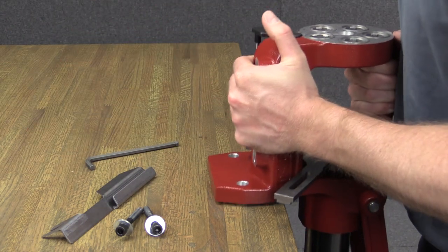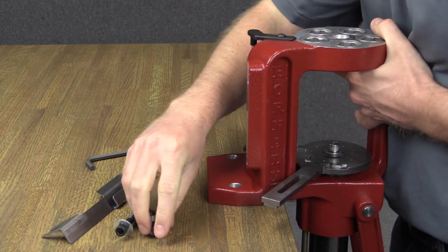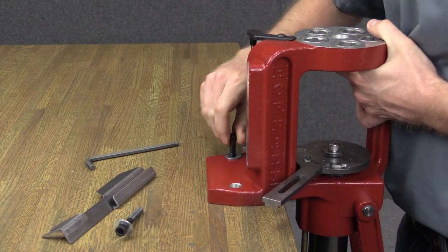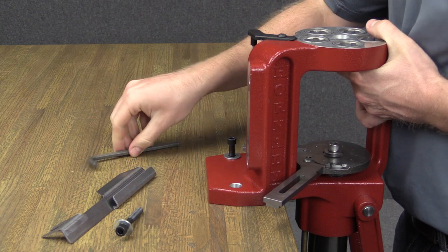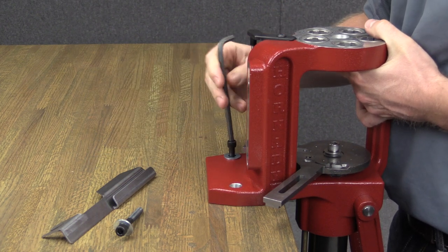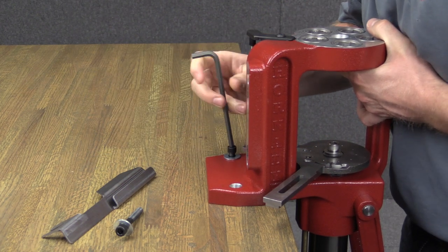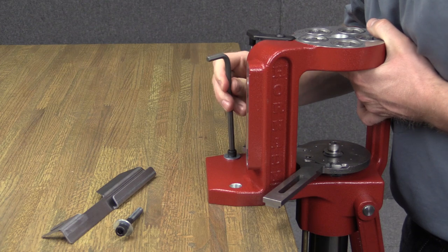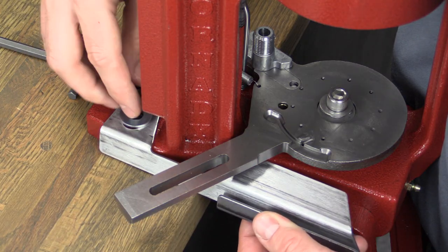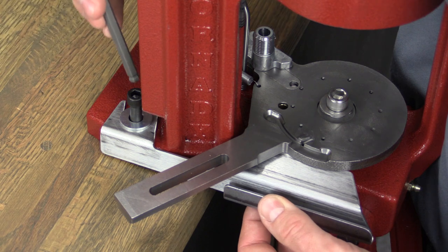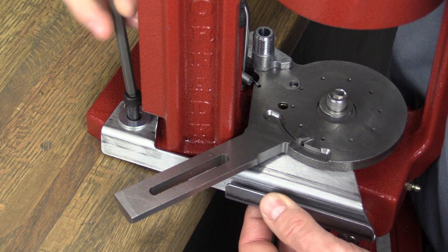Securely mount the press using two 5-16 inch bolts. We also recommend using a 5-16 flat washer in addition to lock washers on the bottom side. Line up the holes in the cartridge catch bracket with the holes in the press frame. Insert and firmly tighten both bolts.